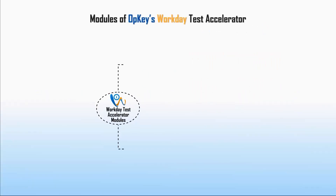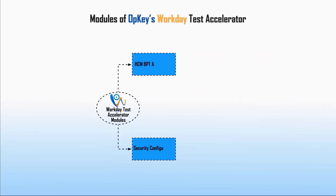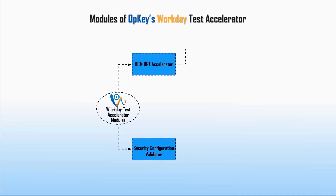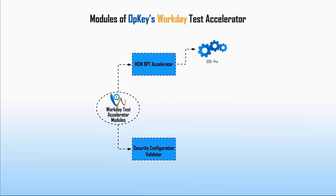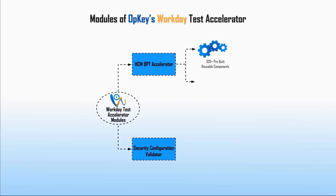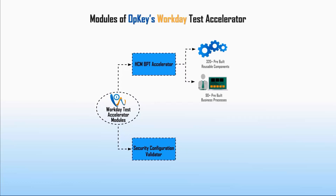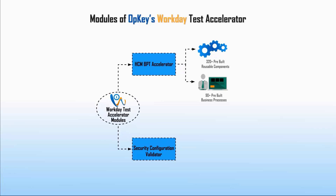Opkis Workday Test Accelerator has two modules. The first one is the HCM Business Process Testing Accelerator. It has 320-plus pre-built business components and 90-plus business processes that can be executed with more than thousands of data sets.